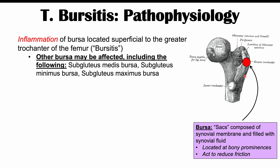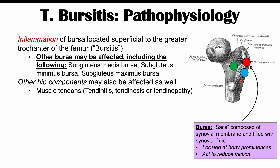Even though this condition is known as trochanteric bursitis or greater trochanteric pain syndrome, other bursa may be affected. Some of these include the subgluteus medius bursa, subgluteus minimus bursa, and subgluteus maximus bursa — all located in and around the greater trochanter. Even other hip components may be affected, including muscle tendons in this area, which could lead to tendinitis, tendinosis, or some other tendinopathy.